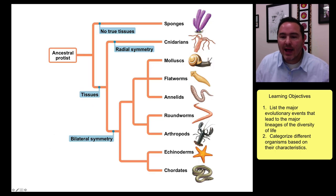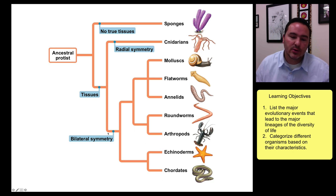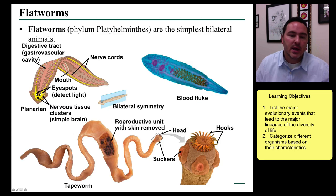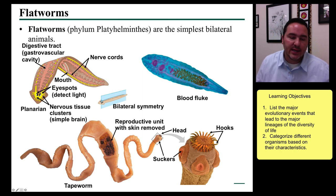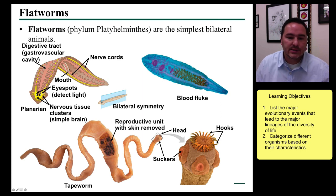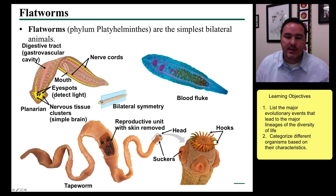Next we're going to look at the flatworms. Some of the original bilaterally symmetrical organisms looked something like flatworms. Of the flatworms still alive today, this is the Phylum Platyhelminthes. They have a very simple digestive tract that ends in a blind cavity — there's a mouth but no anus. They have simple sensory organs like simple eyes, and many of them are parasitic, like the flukes and tapeworms.